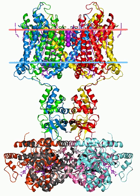The delayed rectifier category includes slowly inactivating or non-inactivating channels. KVα1, shaker-related channels include KV1.1, KV1.2, KV1.3, KV1.5, KV1.6, KV1.7, KV1.8, and KCNA10.